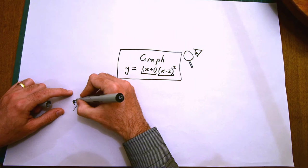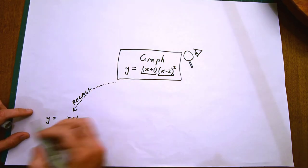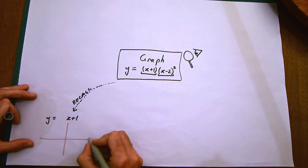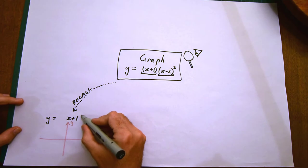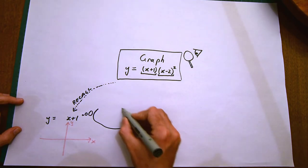We'll start by remembering one or two things we know about graphing straight lines. Let's look at what the graph of y equals x plus 1 looks like. It has slope 1. I want to pay particular attention to the x-intercept of this graph.